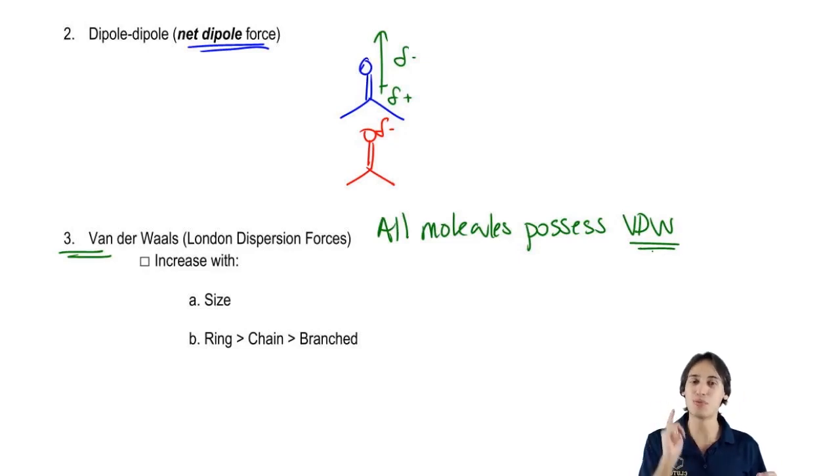The very first thing and most important thing is the size and that has to do with the molecular weight of the molecule. The higher the molecular weight, the stronger the van der Waals. Pretty easy. Cool.